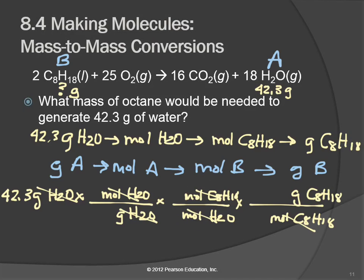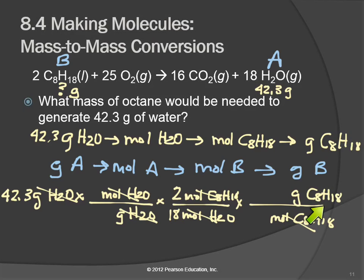Setting up: 5.50 grams magnesium hydroxide times three fractions. Same units on top of each term. Denominators: grams of Mg(OH)2, moles of Mg(OH)2, moles of HCl. Middle term from the balanced equation: there's no coefficient in front of Mg(OH)2 — chemists don't write the 1 — and there's a 2 in front of HCl, so 2 over 1.